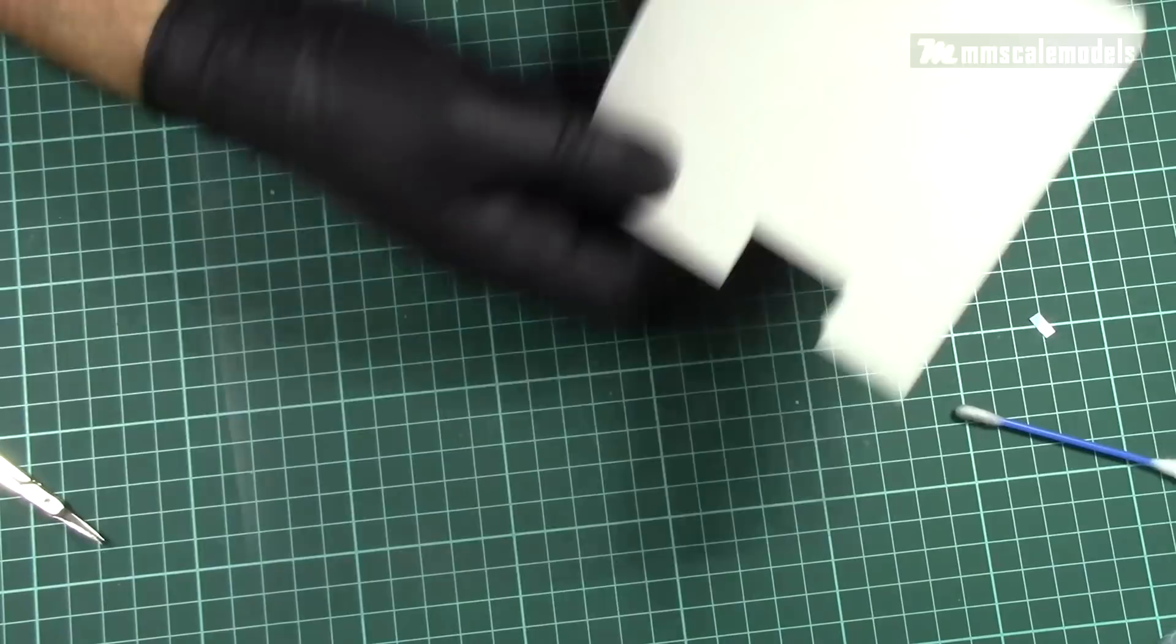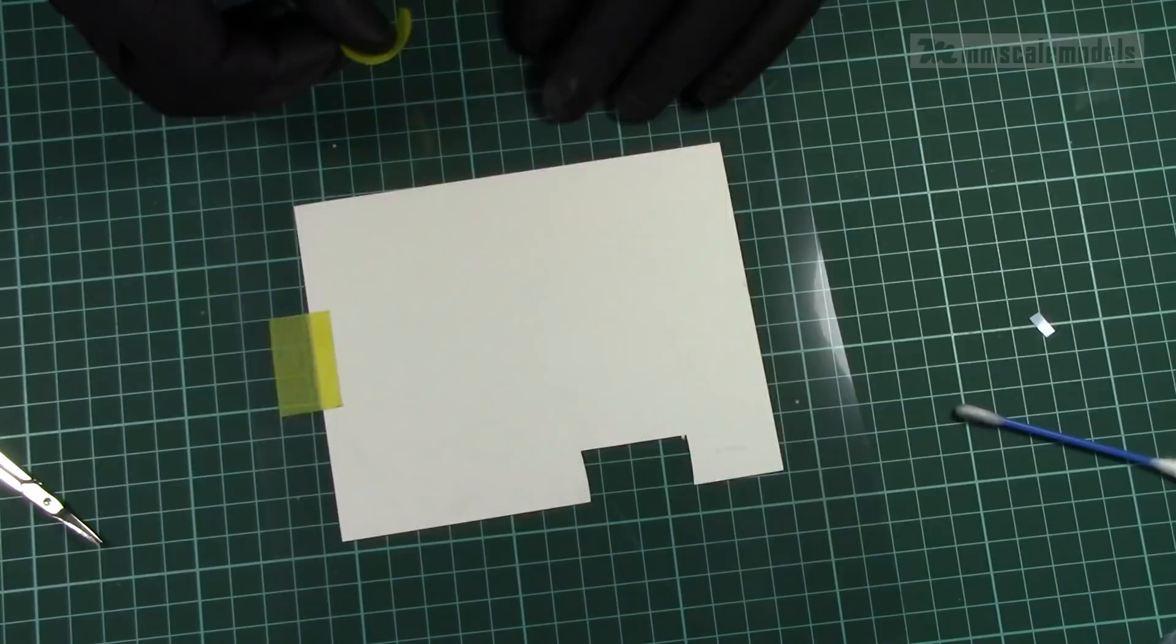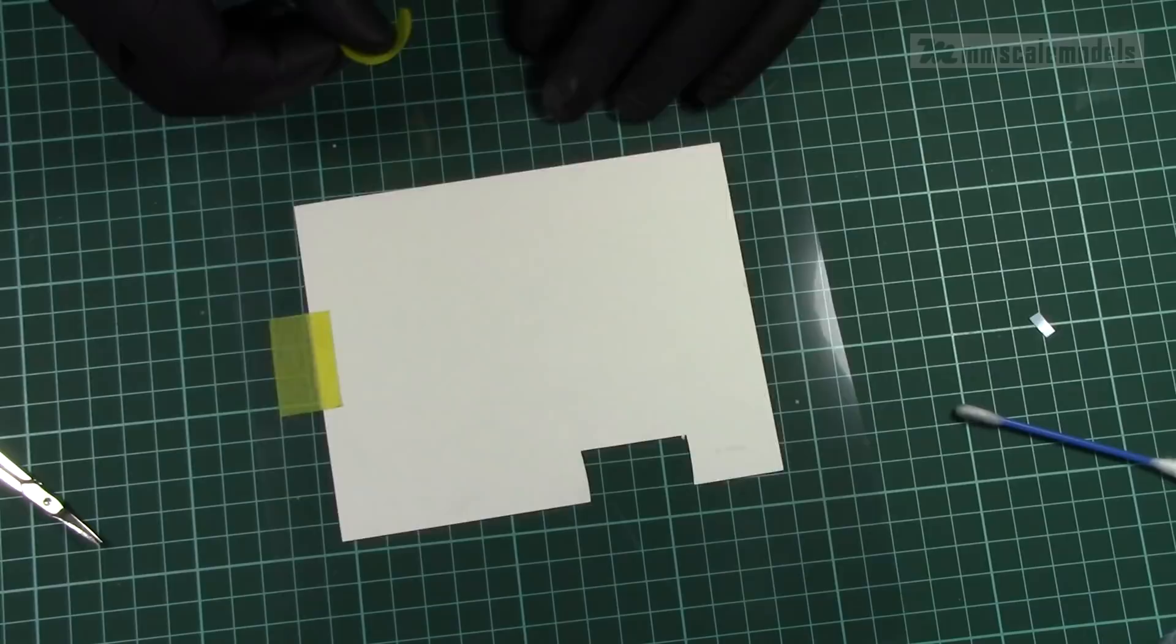I am going to attach the decal sheet to the acetate using some tape. But first I will clean it up so I don't accidentally damage the decal sheet. Most of the tools and materials I use you can find linked in the description.